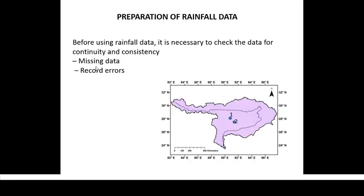Generally, when we deal with rainfall, we have to analyze the long-term rainfall data. Before we start analyzing, we have to check for its continuity and consistency. That means whether there is any missing data or whether there is any error in the previous records. By continuity, I mean that throughout the past data, there should not be any particular days where we don't have rainfall data. Also, there should be consistency in the past year data.